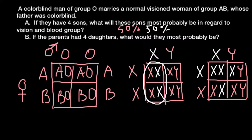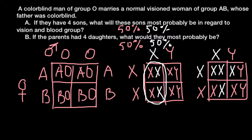Now let's answer question B: if the parents had four daughters, what would they most probably be? The daughters have the same probabilities: 50% would be affected with colorblindness and 50% would not be affected but would be carriers. So in terms of phenotype, 50% would appear normal and 50% would express the genetic disorder, though the phenotypically normal daughters would be carriers. As for blood type, 50% of the progeny — regardless of sex — would belong to blood group A, and 50% to blood group B.